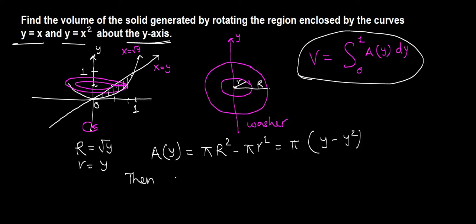Then the volume of this solid of revolution is given by 0 to 1, A(y). A(y) is, in fact, let me write, the area of the washer, π(y minus y squared) dy. Let's evaluate this definite integral. We are done.